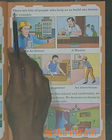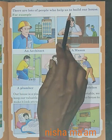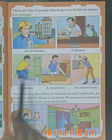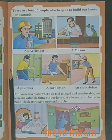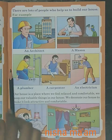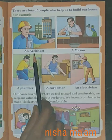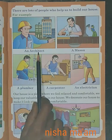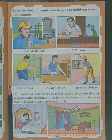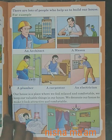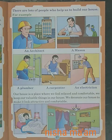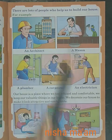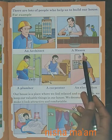There are lots of people who help us to build our house. हमारे एक घर को बनाने के लिए बहुत सारे लोग help करते हैं। An architect — architect एक ऐसा इंसान होता है जो हमारे घर की design draw करता है। हमें कैसा घर चाहिए, कहां room आएगा, वो सब decide करके drawing करके planning करता है।